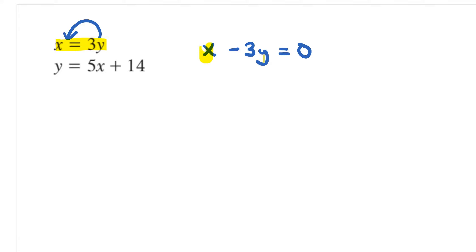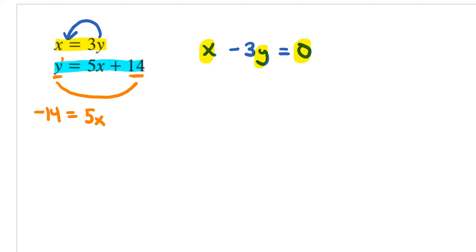You'll notice that we want the x variable first, the y variable second, and the constant on the right-hand side. And if I take a look at my second equation, it's not written in the right form. So I can look at this y and this 14, and I would switch those two terms. If I bring that positive 14 to the left-hand side, I get negative 14. The 5x remains, and if I move the positive y to the right-hand side, I get a negative y. So I have 5x minus y equals negative 14.